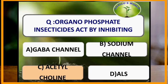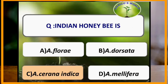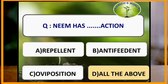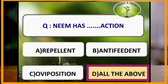Organophosphate insecticides act by inhibiting acetylcholine. The Indian honey bee is Apis cerana indica; Apis florea is the smallest bee; Apis mellifera is the Italian bee. Neem has repellent, anti-feedant and oviposition retardant actions.